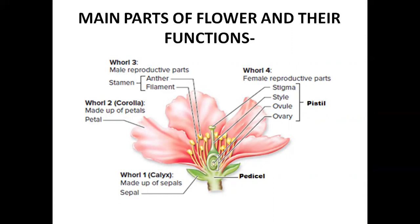The next part is the corolla or petals. This is the colorful part of the flower which attracts insects for pollination. The third part is the male reproductive part, known as the stamen. Stamen consists of two parts: anther and filament. The anther produces pollen, and the filament gives it support.